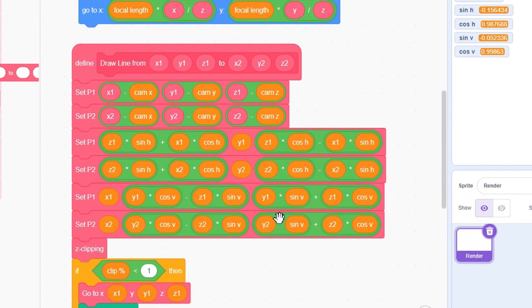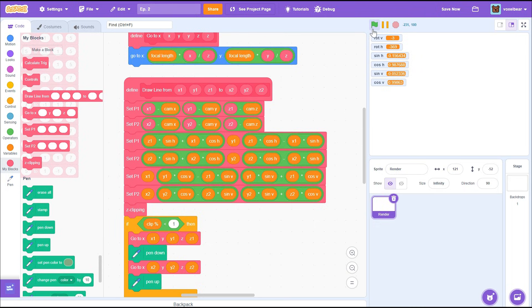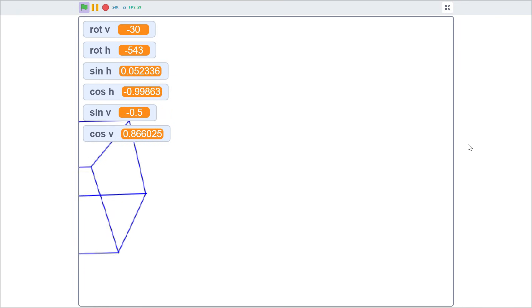So as you can see in horizontal rotation, the y value of each point remains constant, while in the vertical rotation, the x value remains constant. Now it's really easy to mess up here, so make sure your code looks exactly like this. And if it does, then congrats! That's basically the hardest part done!